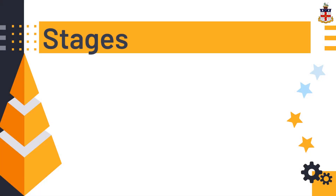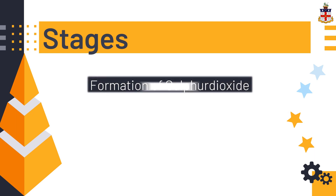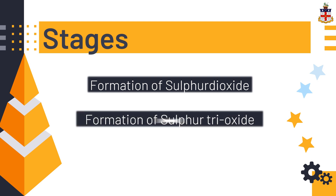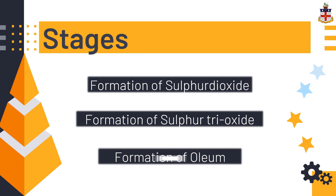The process involves three important stages. In the first stage, formation of sulfur dioxide takes place. The second stage involves the formation of sulfur trioxide, and in the third and final stage, oleum is formed.